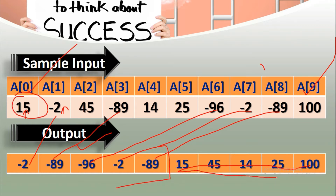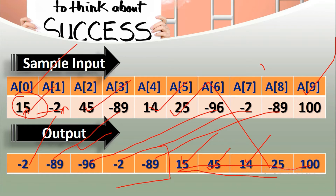Saare ke saare positive. Ab jo first positive hai wo kaun sa hai? 15 aa gaya, first 15. Uske baad second kaun sa number hai positive? 45, so 45. Uske baad 14, so 14 aa gaya yahan par. Uske baad 25 hai positive, so yahan par 25 positive, then 100.